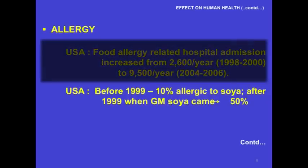This doesn't by any means establish that the increase is on account of GM material, but it makes it probable. Anaphylaxis cases from food in the United States increased from 21,000 to 51,000 during the period that GM food has been used, pointing to the same conclusion. Before 1999, 10% were allergic to soya; after 1999, when GM soya came, 50% had become allergic to soya. I think there is a great deal of circumstantial evidence suggesting a serious allergy problem with GM crops, even as far as humans are concerned.